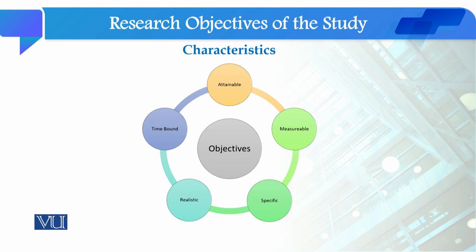Research objectives की कुछ specific characteristics हैं। First of all, research objectives should be measurable. जब हम quantitative research study design करते हैं तो हमारा basic focus होता है कि आपके जो concepts और variables हैं वो measurable होने चाहिए, और इसी तरह जब हम objectives of the study लिखते हैं तो उनमें जो variables हम decide करते हैं उनको measurable होना चाहिए।